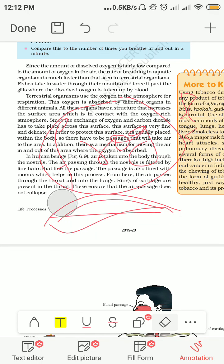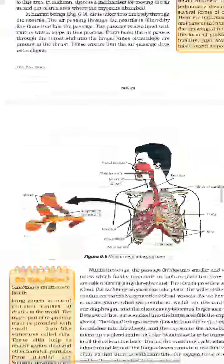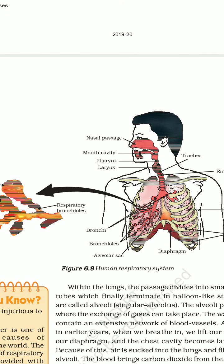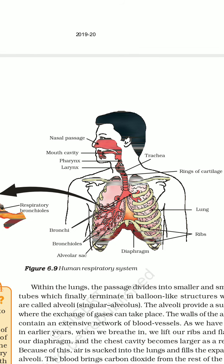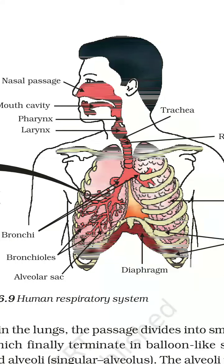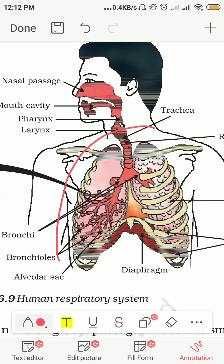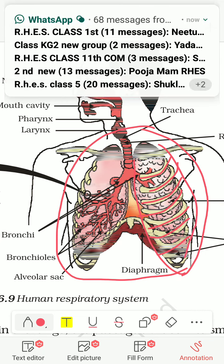Now let's move towards human beings. You can see this structure here — this is the human respiratory system. You can see how this respiratory organ is protected by the rib cage. This organ is very delicate, which is why it is very important to protect it. The rib cage acts like a jail protecting our lungs.